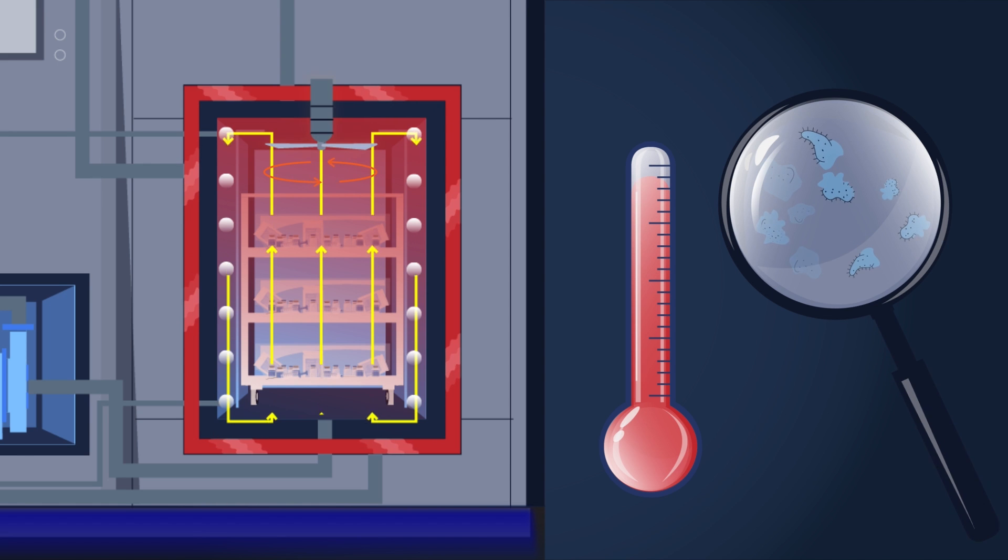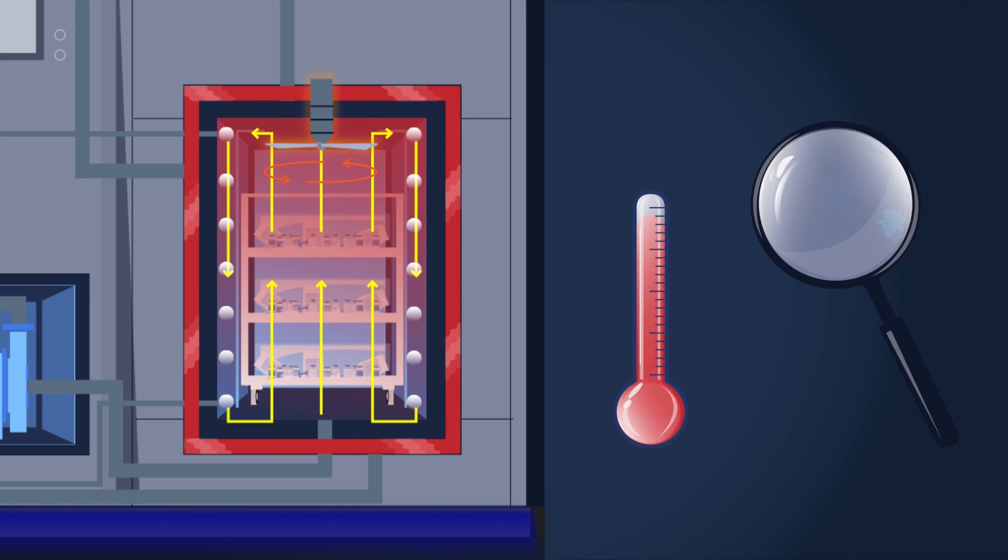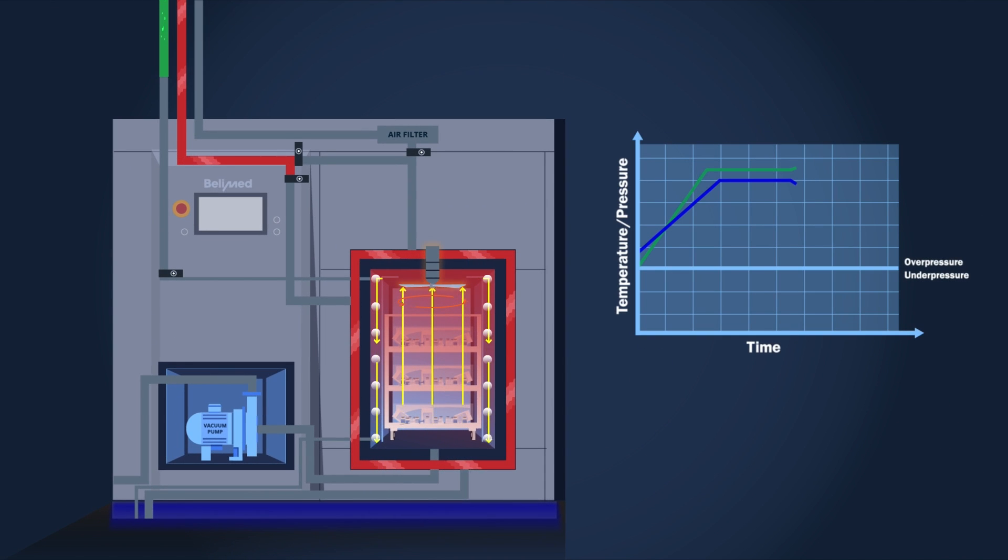Depending on the product to be sterilized, the duration of this phase can be adapted. After the sterilization phase, the cooling registers are used to cool the steam air mixture down. The ventilator is used for this step to push the hot mixture along the cold water pipes.